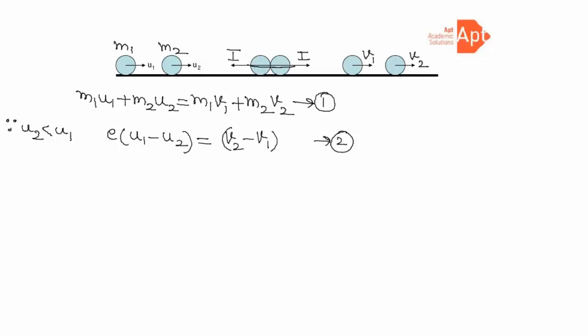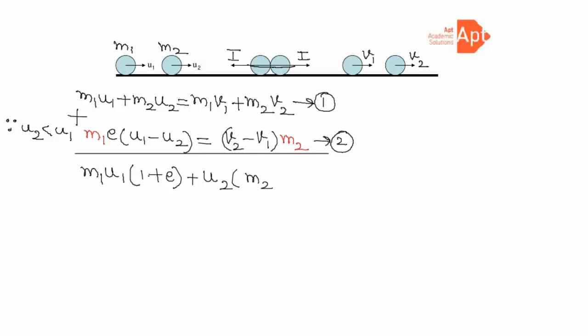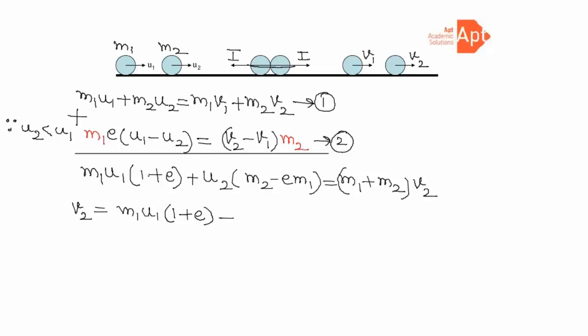We want to solve these two equations for v1 and v2. Multiply the second equation by m1 on both sides and add to the first equation. We get: m1·u1·(1 + e) + u2·(m2 − e·m1) = (m1 + m2)·v2. Therefore, v2 = [m1·u1·(1 + e) + u2·(m2 − e·m1)] / (m1 + m2).